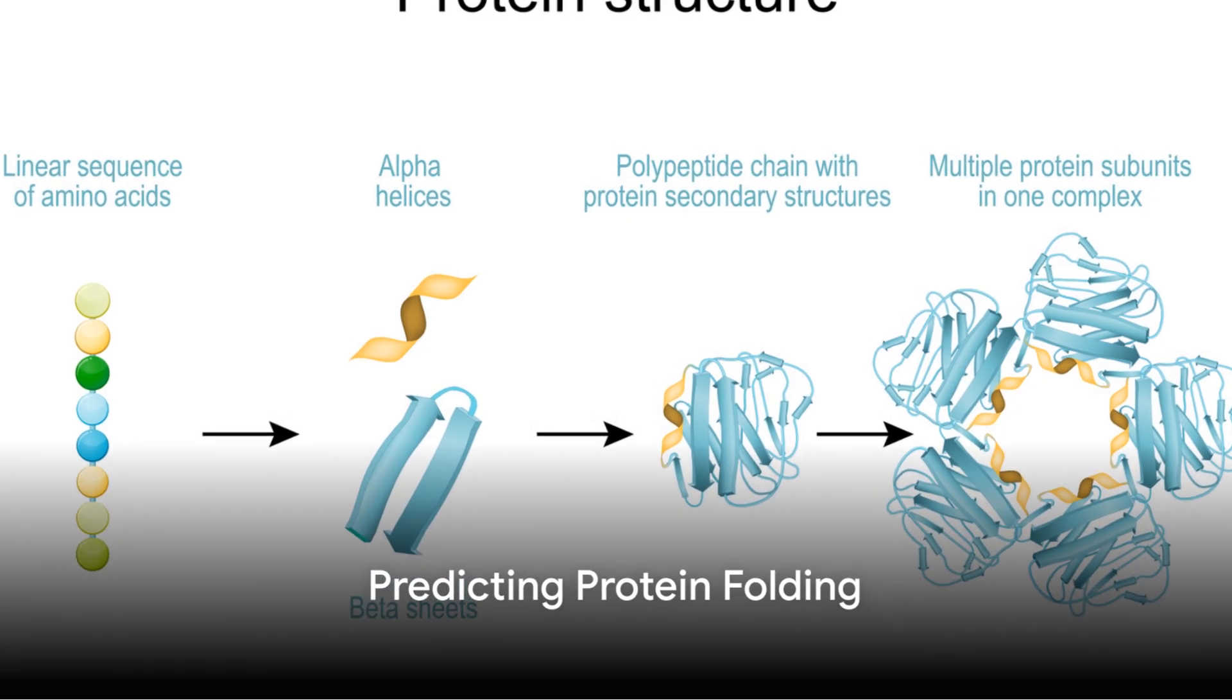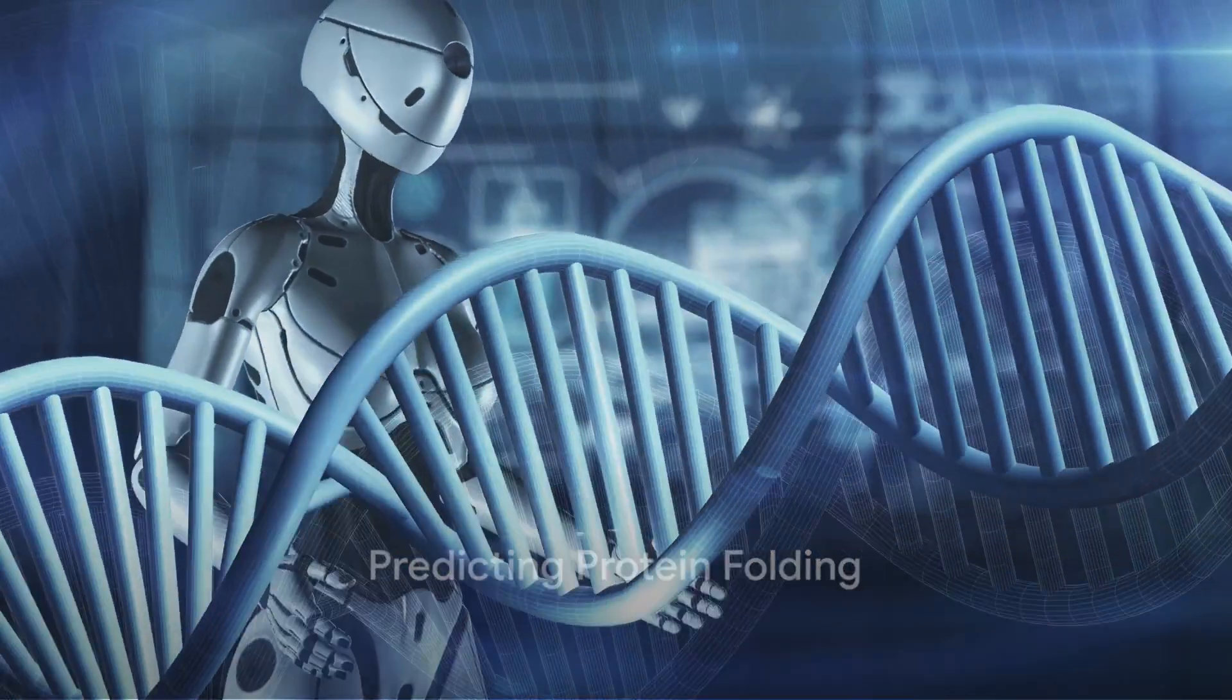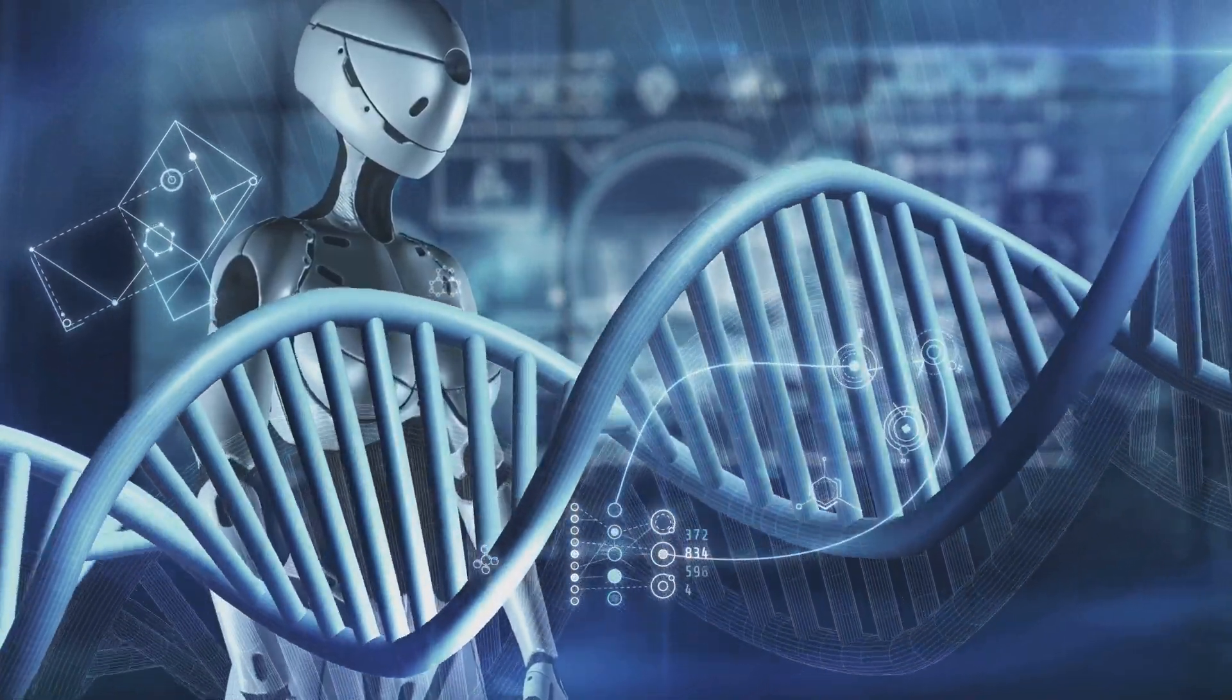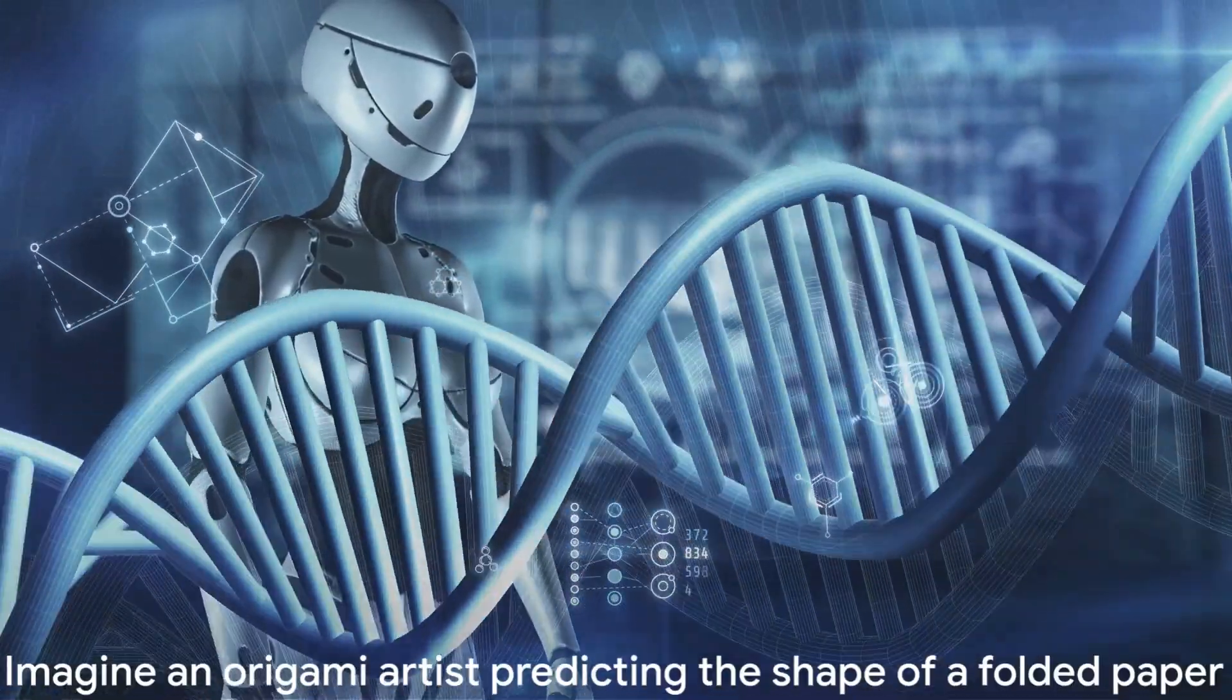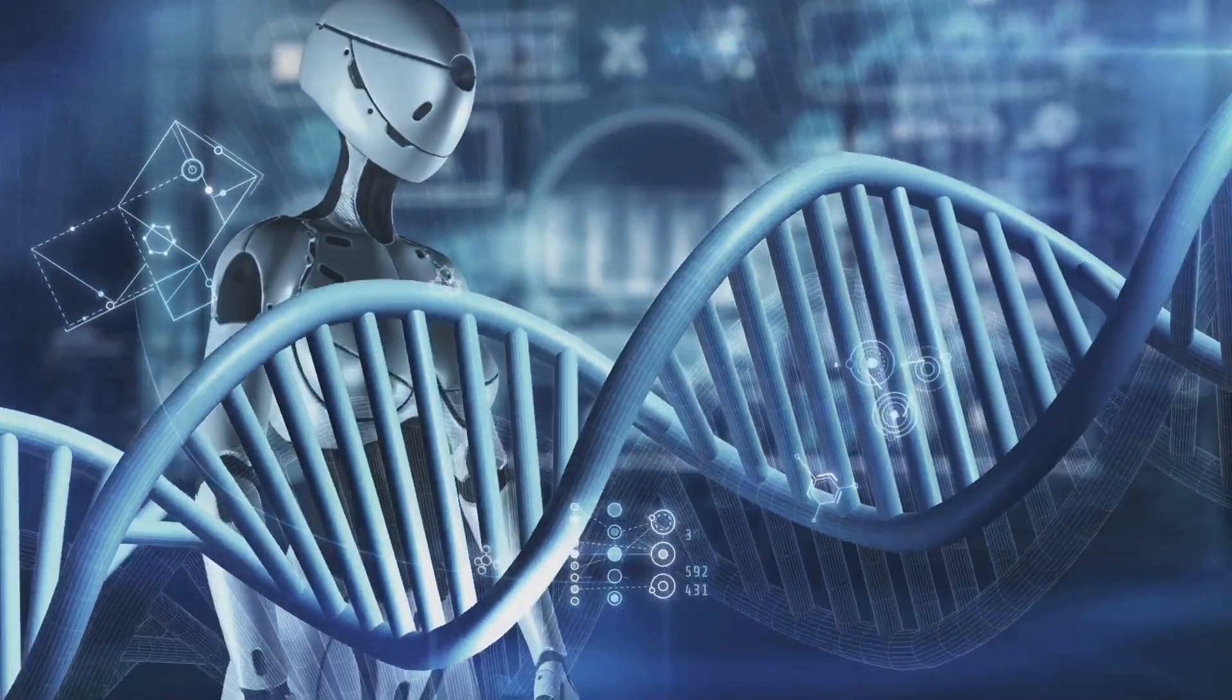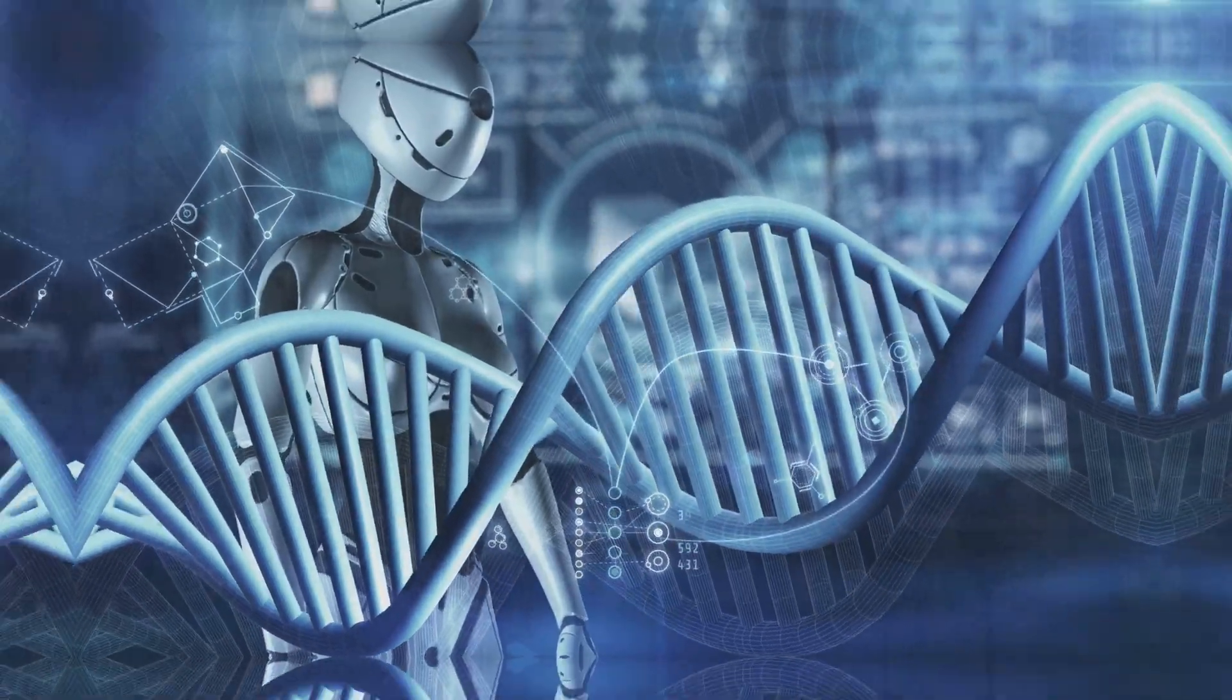Then, based on the relationships it learns between different parts of the sequence, AlphaFold predicts how the protein will fold into its final 3D structure. It's like a super-smart origami artist who can look at a flat piece of paper and accurately predict what 3D shape it will become.